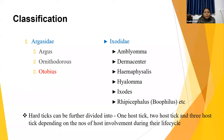The hard ticks include Amblyomma, Dermacentor, Haemaphysalis, Hyalomma, Ixodes, and Rhipicephalus, all under the family Ixodidae. For sheep and goat, the most important genera are Hyalomma, Rhipicephalus, and Haemaphysalis.